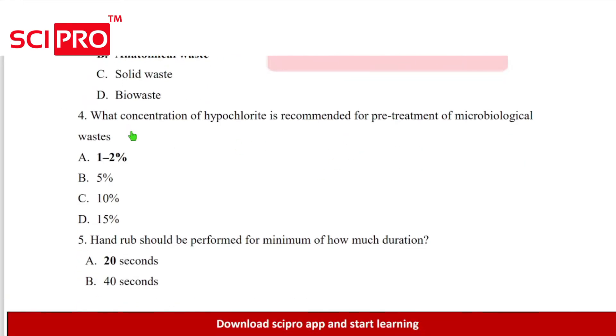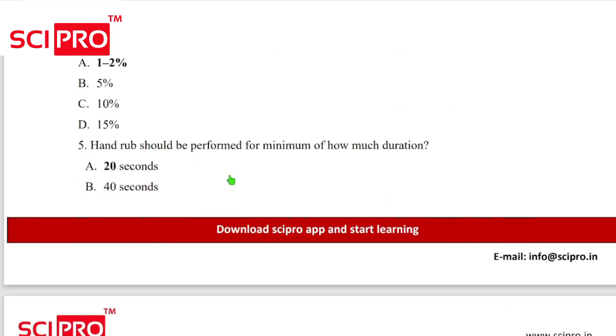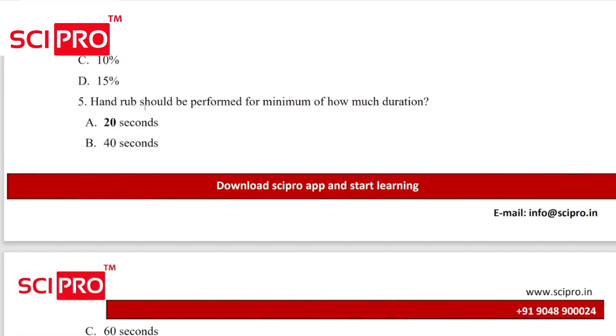Question number four, what concentration of hypochlorite is recommended for pre-treatment of microbiological waste? Answer 1 to 2 percentage. Question number five, hand rub should be performed for minimum of how much duration? 20 seconds.